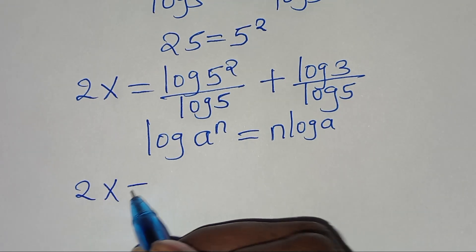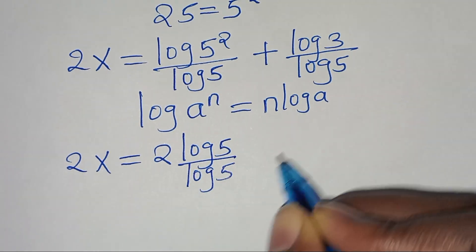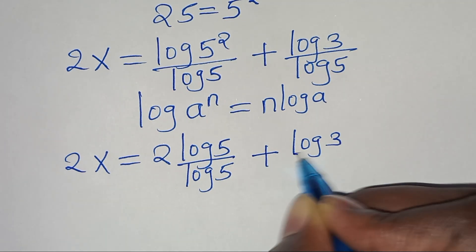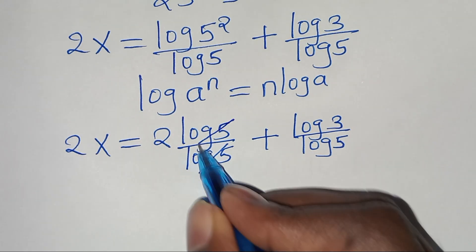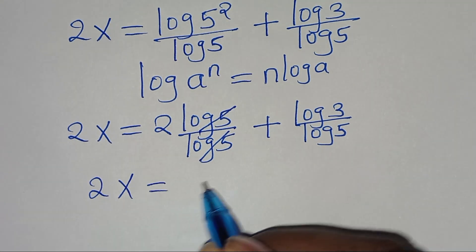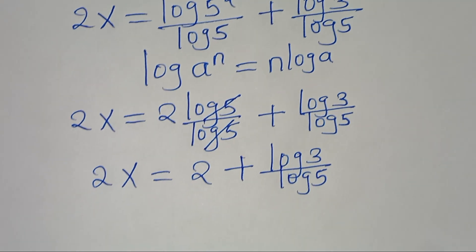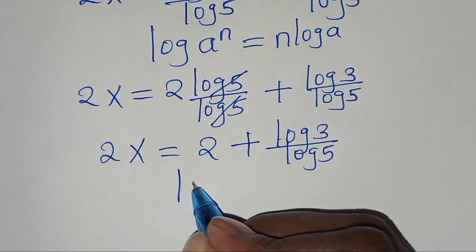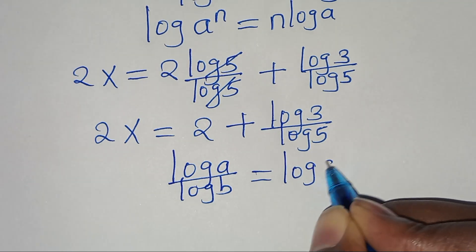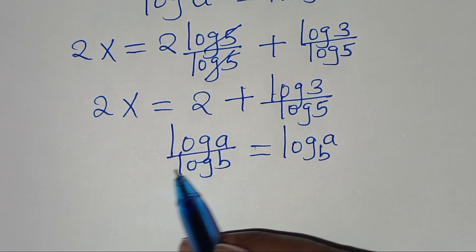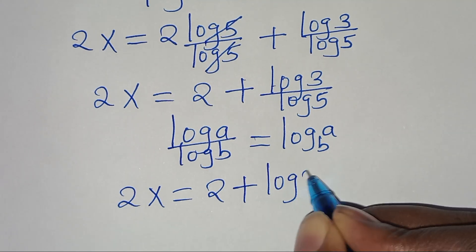So 2x equals 2·log 5 divided by log 5, plus log 3 divided by log 5. Simplifying, we get 2x equal to 2 plus log 3 divided by log 5. Since log 3 divided by log 5 is in the form log a divided by log b, which equals log base b of a, we have 2x equal to 2 plus log base 5 of 3.